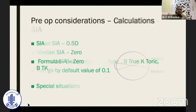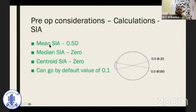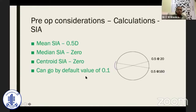Previously we were using mean SIA, but now we have to use centroid SIA because this considers the direction as well. As you can see in the adjoining figure, the mean SIA and centroid SIA values are different. You can go by a default value of 0.1, but it is better to calculate for yourself.